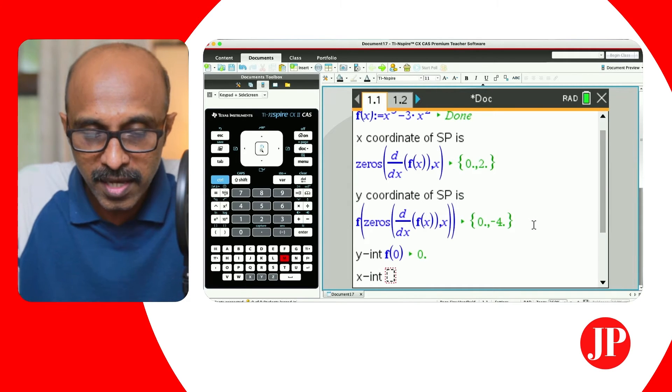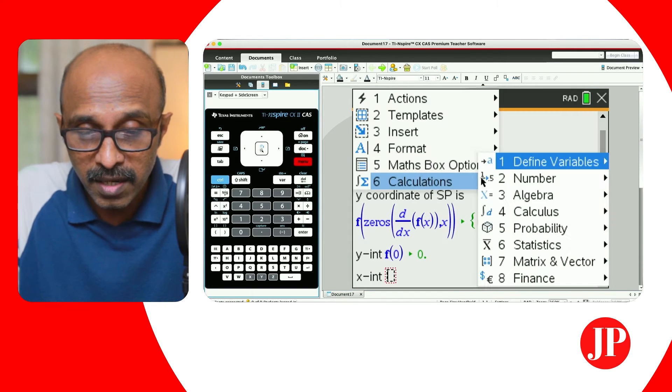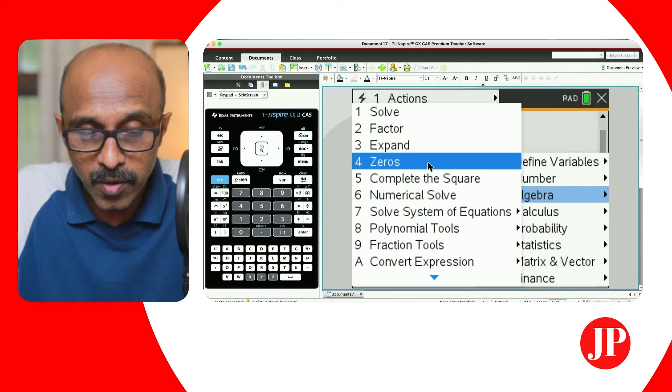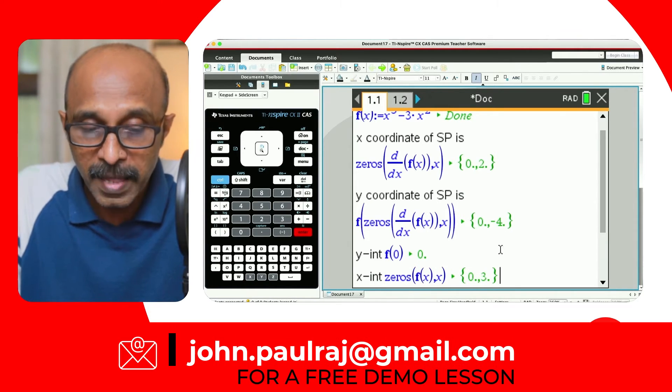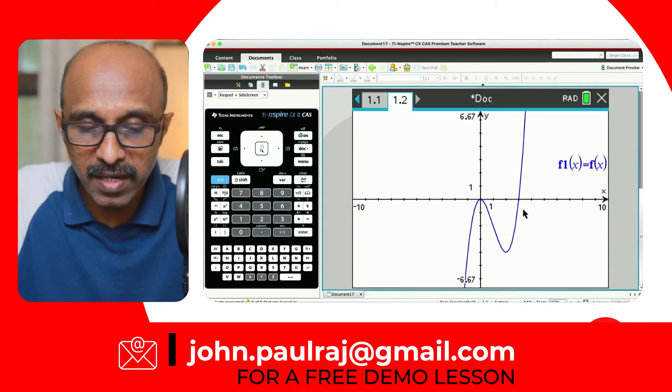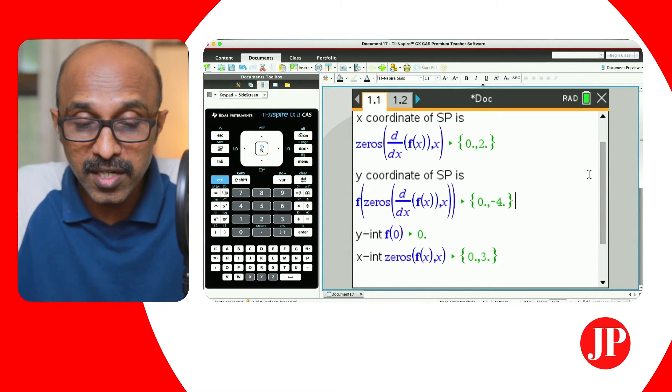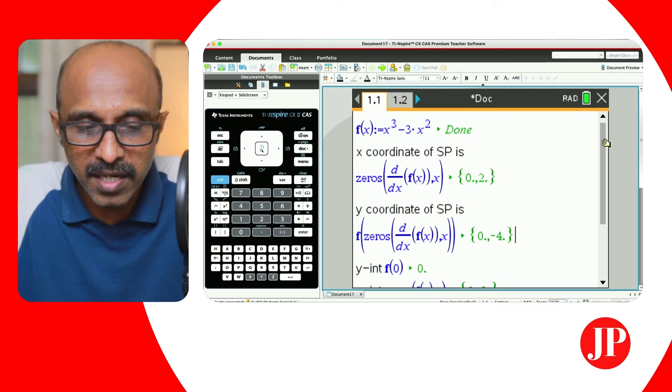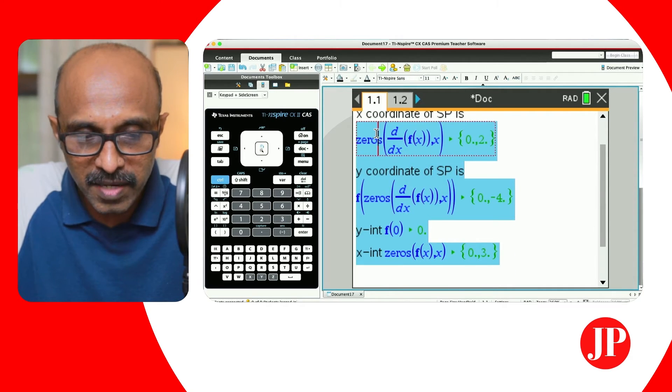In the same way if you want to write the x-intercept, insert the math box and again you want to find the zeros of the function this time. So calculations, algebra, zeros of f(x), comma x, and there you go. That should give you the x coordinates of the x-intercept. As you can see, zero and three. You can verify from the graph. If you needed any other features you can build your widget just according to that.